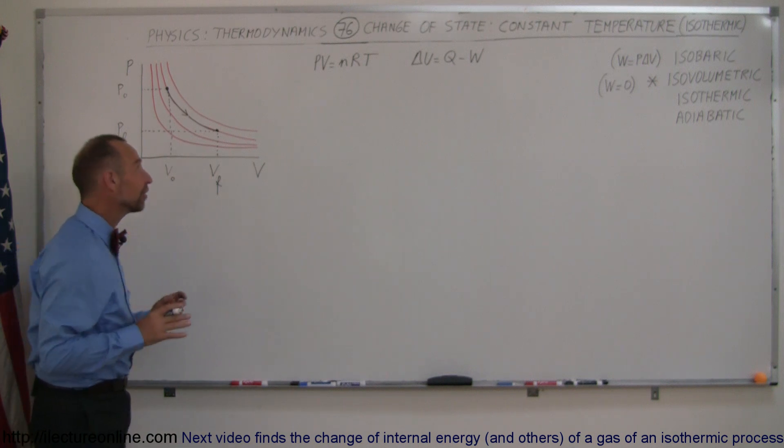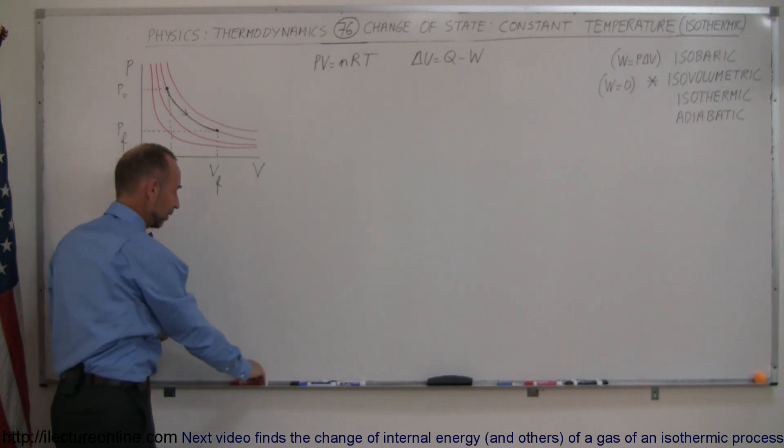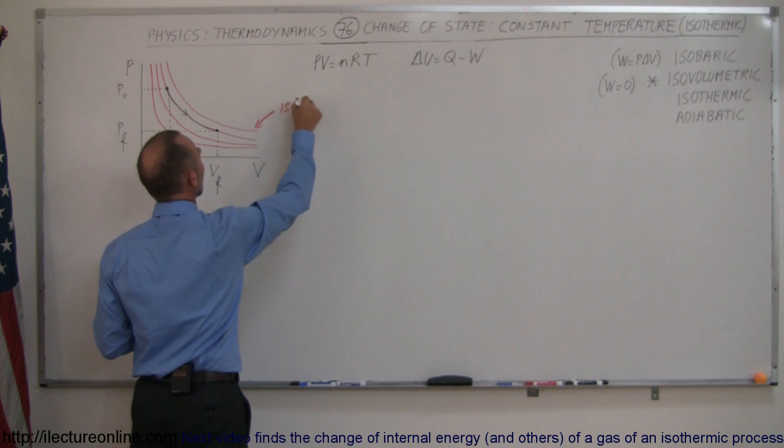So to get a feel for that on the PV diagram, the red lines here represent isotherms, and that's a good term to know.